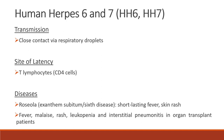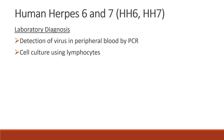Next we have human herpesvirus 6 and 7. Transmission is through close contact via respiratory droplets. The site of latency is T lymphocytes or CD4 cells. The diseases are roseola or exanthem subitum or sixth disease, which presents as short-lasting fever and skin rash. The patient experiences fever, malaise, rash, leukopenia, and interstitial pneumonitis in organ transplantations. For laboratory diagnosis, we can have detection of virus in peripheral blood by PCR and cell culture using lymphocytes.